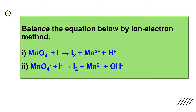For example, this question: balance the equation below by ion-electron method. As we know, the ion-electron method has two ways — in acidic medium and in basic medium. This question does not tell us whether to balance in acidic or basic medium. So if we find H+ in our equation, that means we need to balance it in acidic medium. If we find OH⁻ in our equation, that means we need to balance it in basic medium. After knowing the medium, then we ignore H+ or OH⁻ and separate the equation.